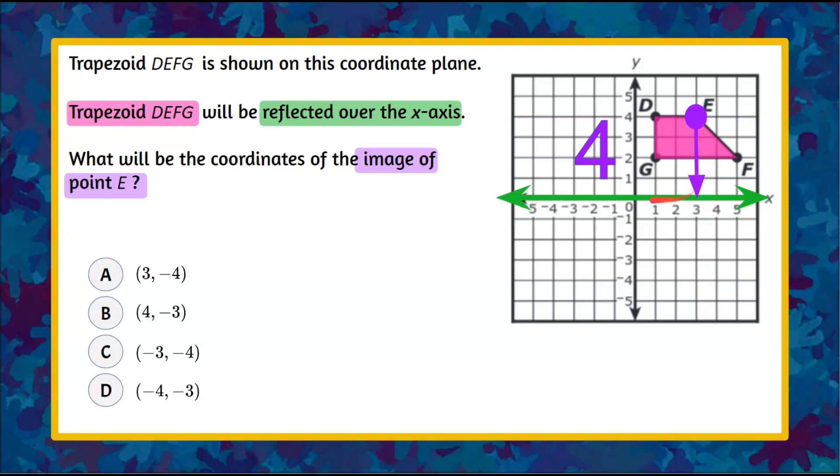So the same distance from the line of reflection. So point E from the x-axis is 1, 2, 3, 4 units above.